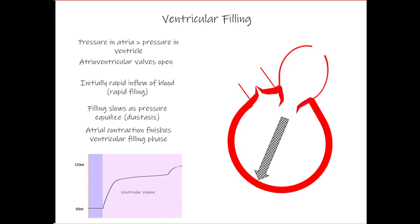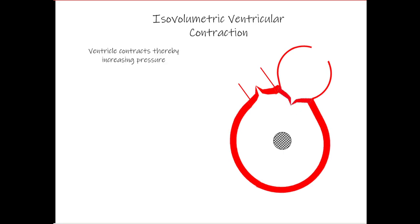Next, the ventricle is depolarized and begins to contract. As it contracts, pressure in the ventricle increases, and when that pressure becomes greater than the pressure in the atria, the atrioventricular valve closes — which accounts for the first heart sound heard with a stethoscope. During this phase, the ventricle continues to contract and pressure builds. This is isovolumetric ventricular contraction, meaning the volume in the ventricle stays the same, from which we can deduce that all valves are closed.